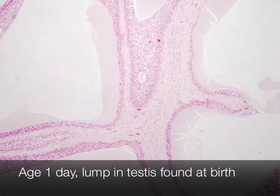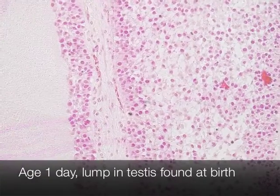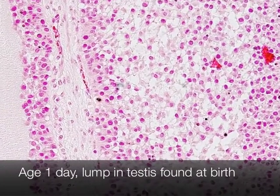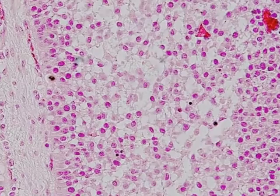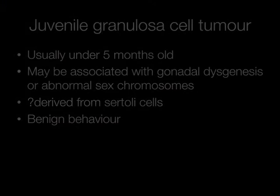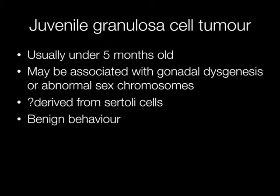This is another example of a granulosa cell tumour, except in this particular case it is not an adult type — it is a juvenile granulosa cell tumour. These occur in infants under five months old. They may be associated with gonadal dysgenesis or abnormal sex chromosomes, and the behaviour is benign.